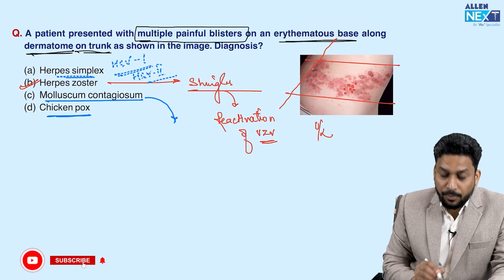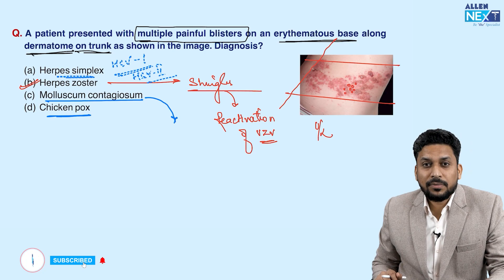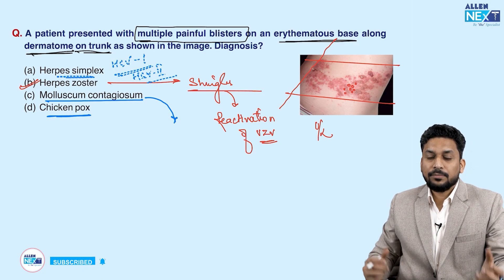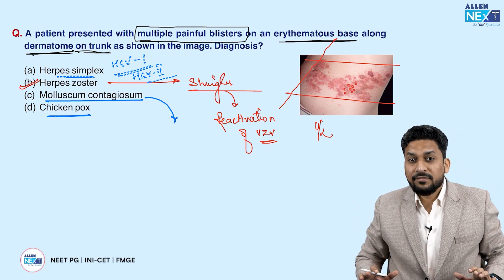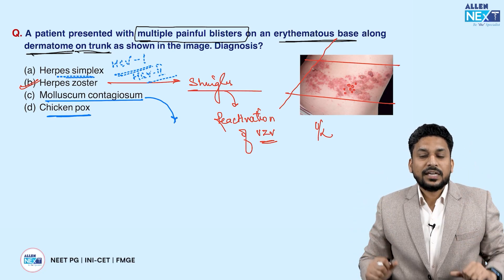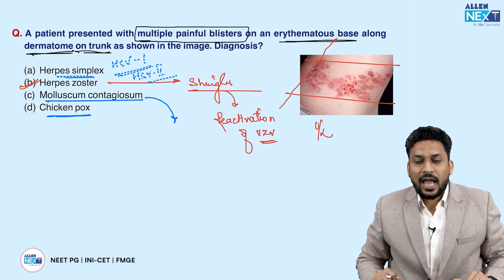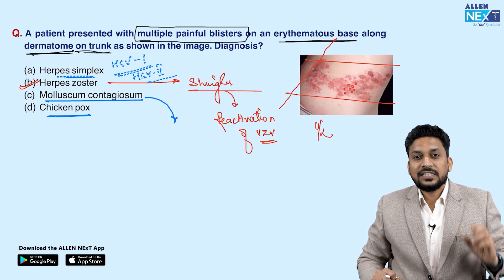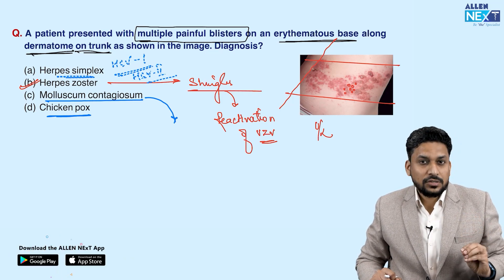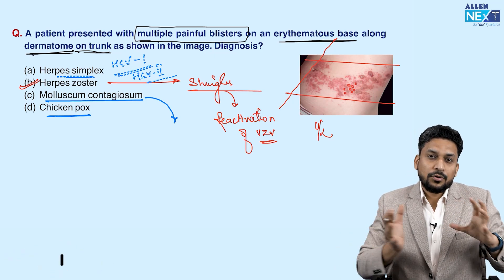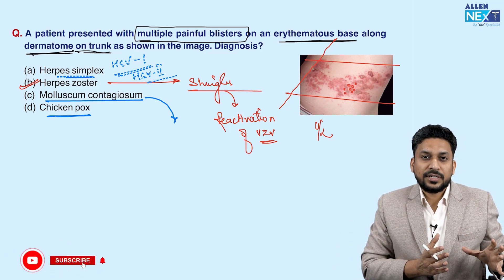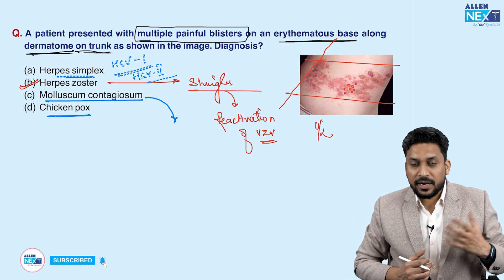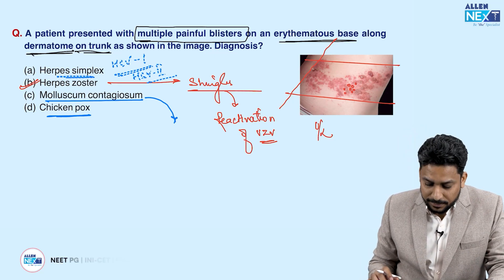The fourth option is chickenpox. Remember, chickenpox is not dermatomal — it can be present over the whole body; even the scalp can get involved and they have centripetal distribution. These are also vesicles, but there are prodromal features like fever and malaise which might be present in the history.